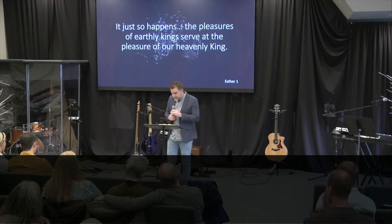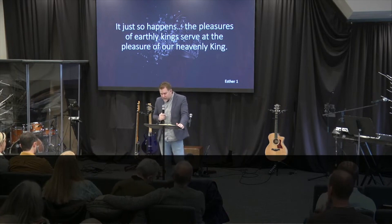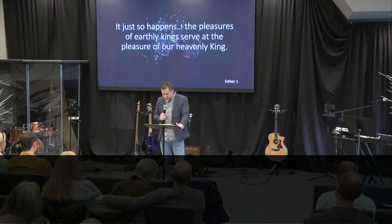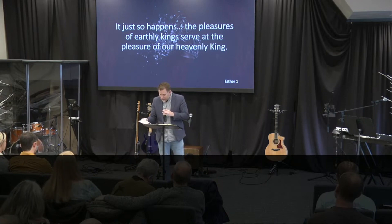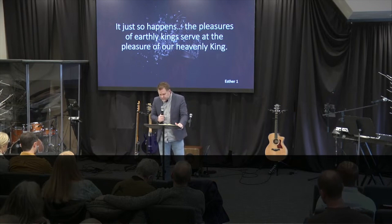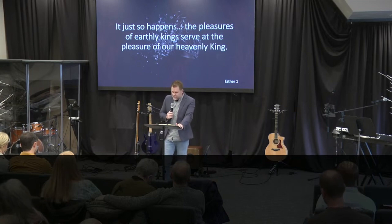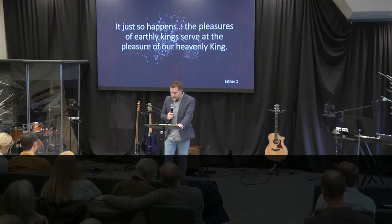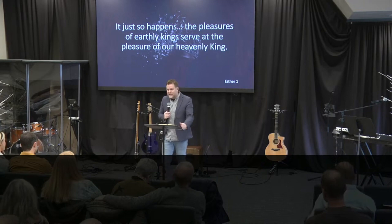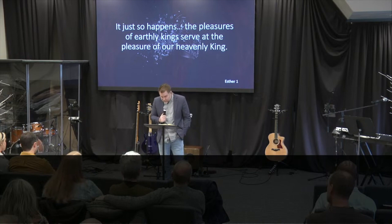John Calvin says, 'There is no erratic power or action or motion in creation, but that they are governed by God's secret plan in such a way that nothing happens except what is knowingly and willingly decreed by him.' Daniel says it this way in chapter 2, verses 20 through 21, that God changes the times and the seasons — he removes kings and he establishes them. Augustine says, 'Trust the past to God's mercy. Trust the present to God's love. And trust the future to God's providence.'